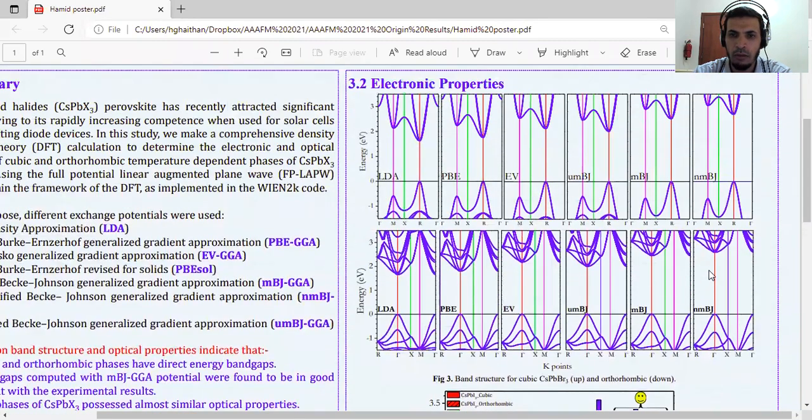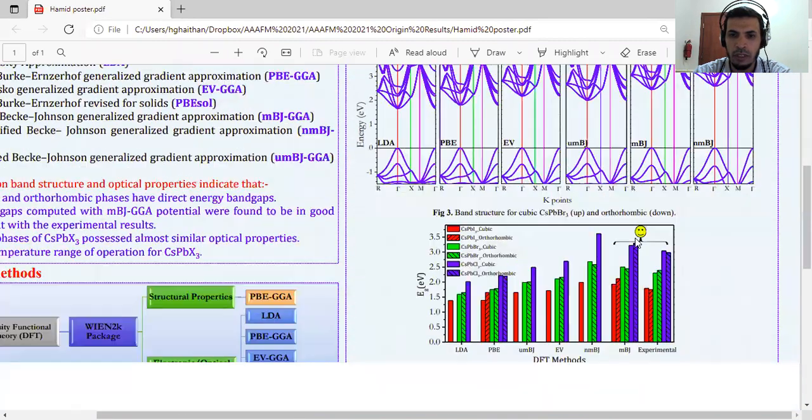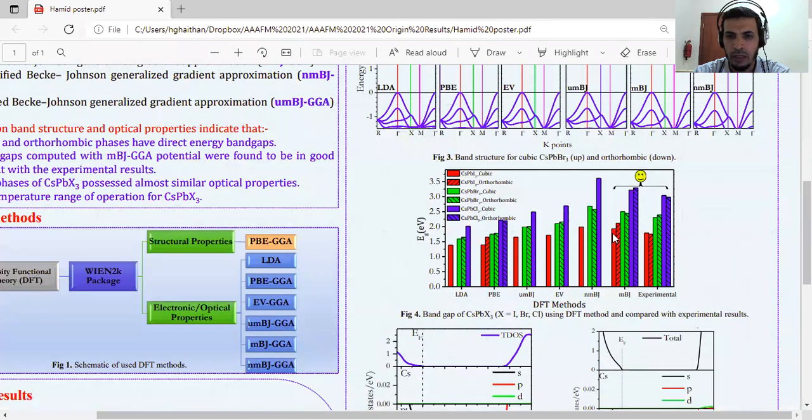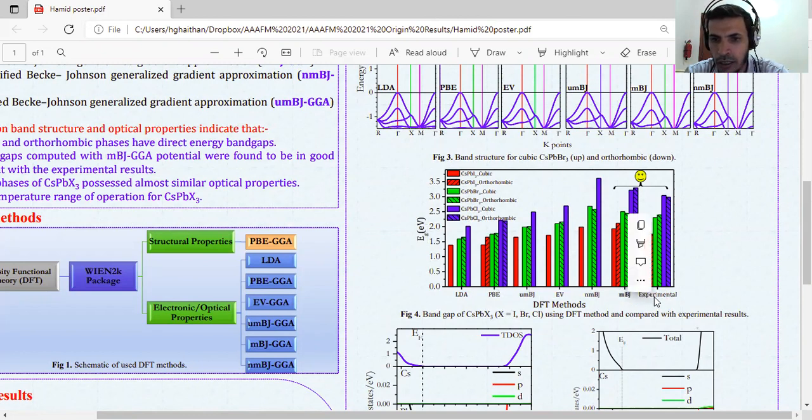How can we know the value of energy bandgap for everyone? When we draw this figure, which shows us the clear view of the energy bandgap for this method, X axis represents the DFT method and Y axis represents energy bandgap. As we can see, MBJ and experimental are in good agreement. This one for cesium iodide, bromide, and chloride. These represent the experiment.